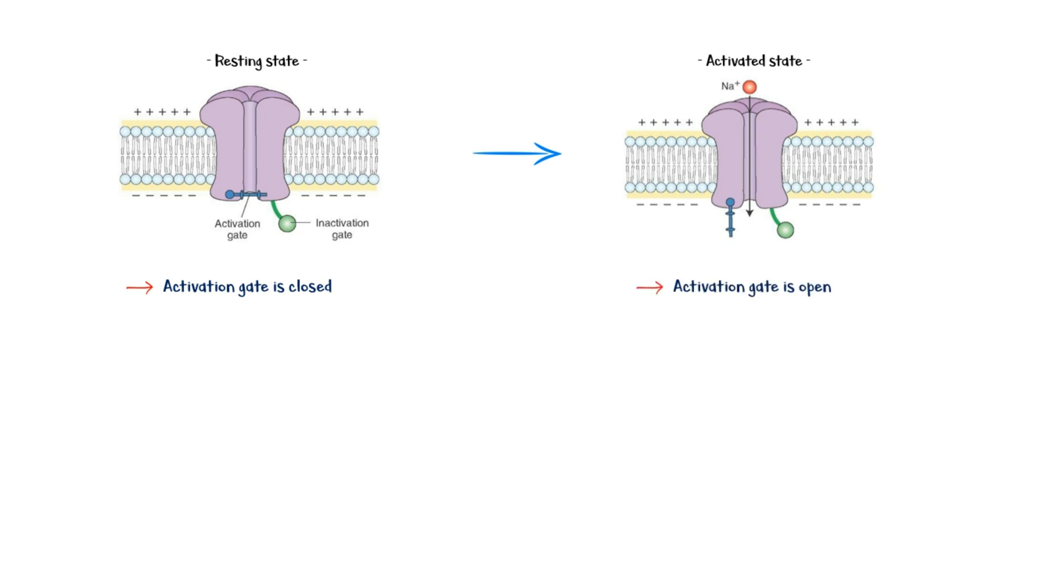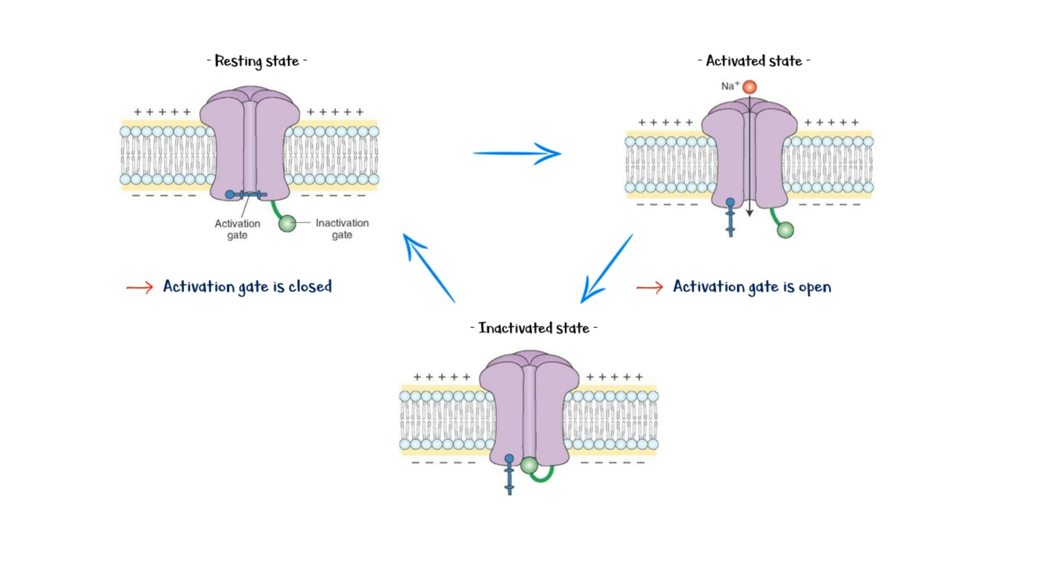Next, the inactivation gate closes, preventing sodium from entering the cell even though the channel is still open. This ends the depolarization process. Finally, when the cell repolarizes, the inactivation gate opens, the activation gate closes, and the channel enters its closed state again.